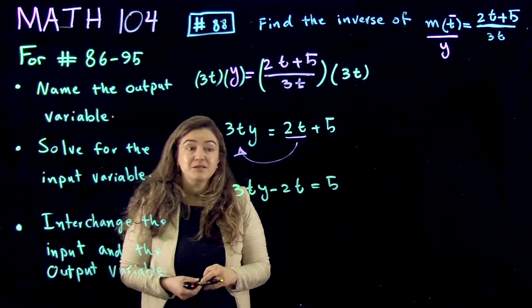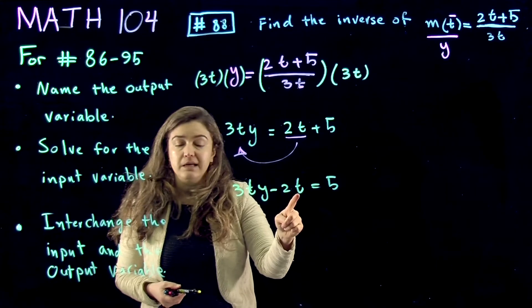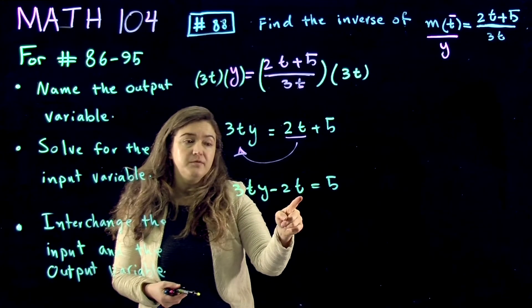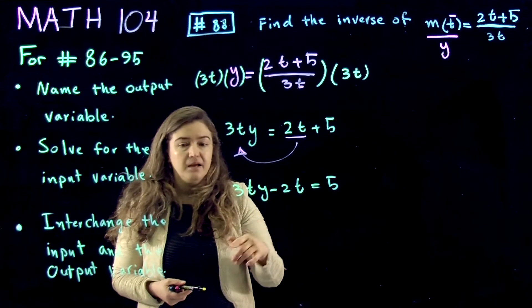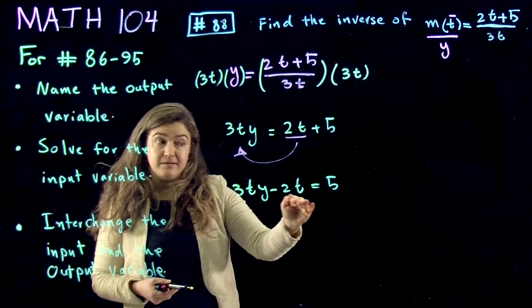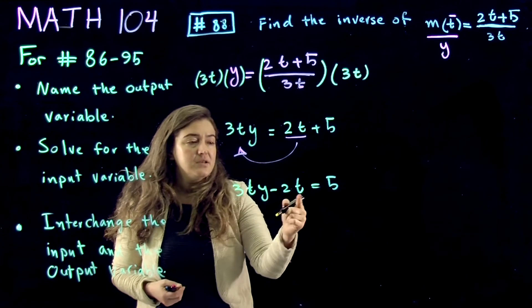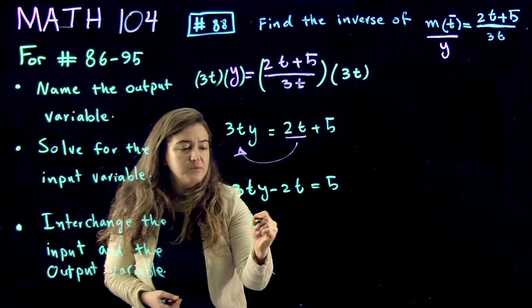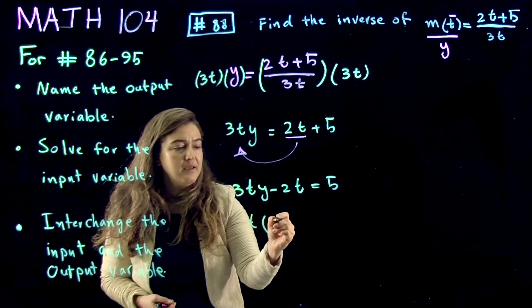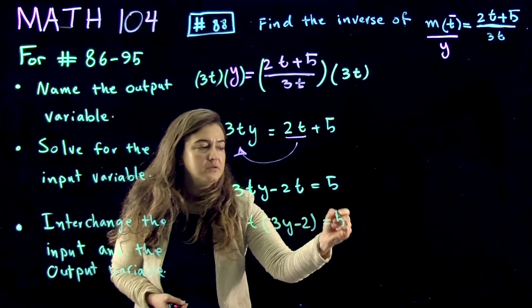The next step is to factor the variable we're solving for out of this side of the equation. Because now t is isolated, now we want to factor it out. So by factoring it out, what we get is t times 3y minus 2 equal to 5.